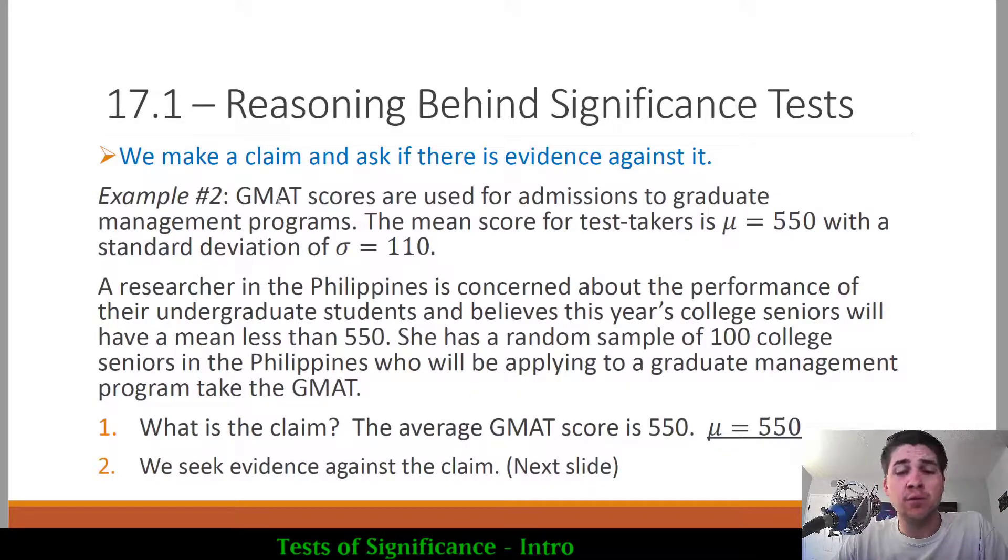Example two from the notes says GMAT scores are used for admission to graduate management programs. The mean score for test takers is mu equals 550 with a standard deviation of 110. In general, the average score on the GMAT is 550 and we're assuming it follows a normal distribution with a standard deviation of 110. Knowing that information tells us a lot about the distribution of GMAT scores.